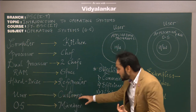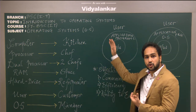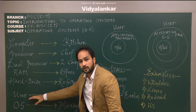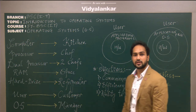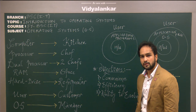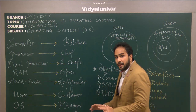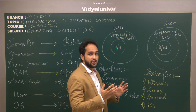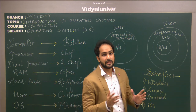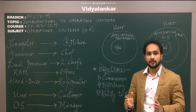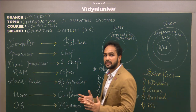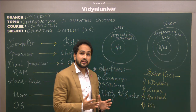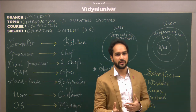The customer who goes to the restaurant is just like the user who is operating the computer system. So by now we have the restaurant, the kitchen, the chef, the space inside the kitchen, the ingredients stored in the refrigerator, and finally the customer who is going to the restaurant.